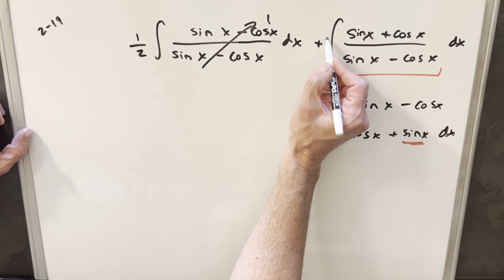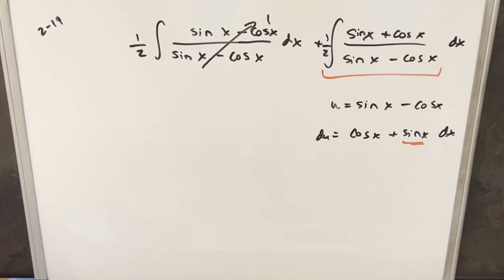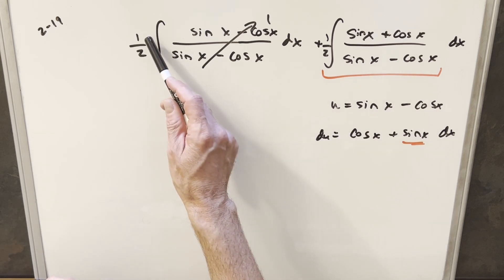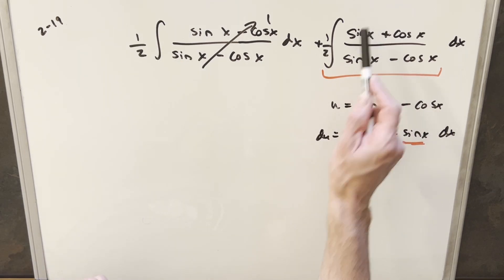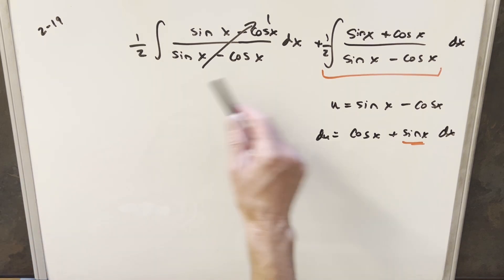I can just multiply out front by one half on both these. And then now notice if we were to multiply everything through, again, the cosines cancel, but we have half sine x plus half sine x gives us the one sine x we had in the original. So now we haven't changed it and we have two really easy integrals.